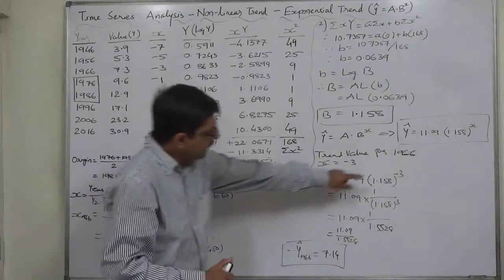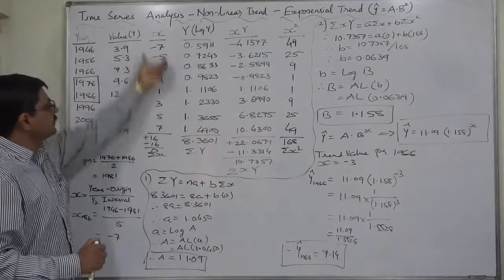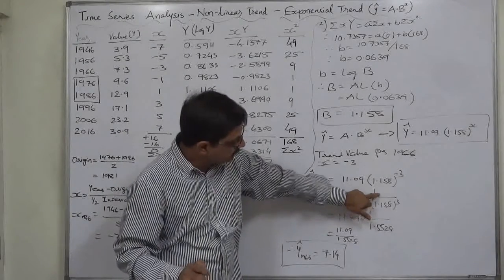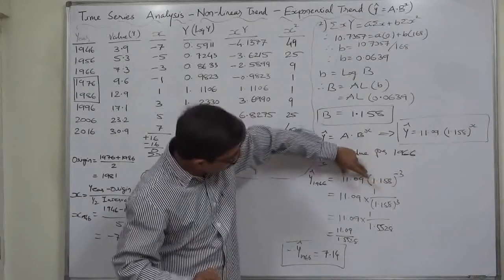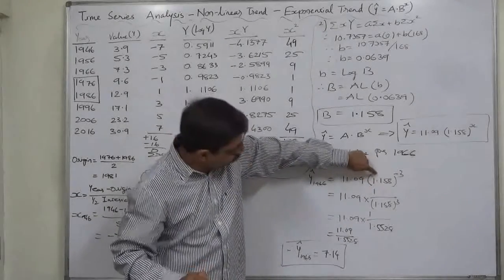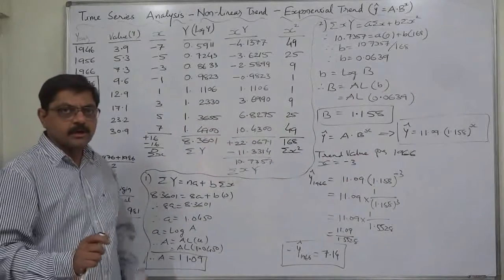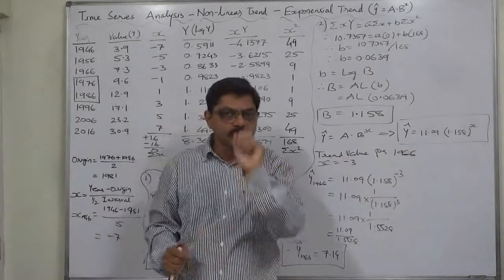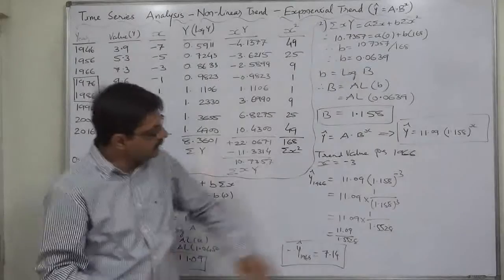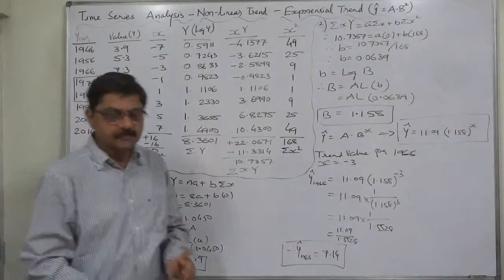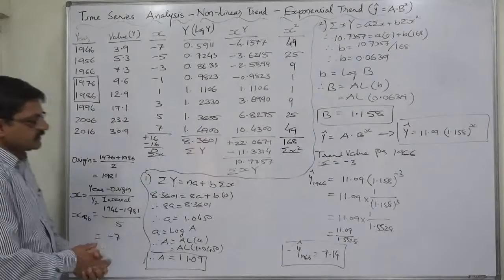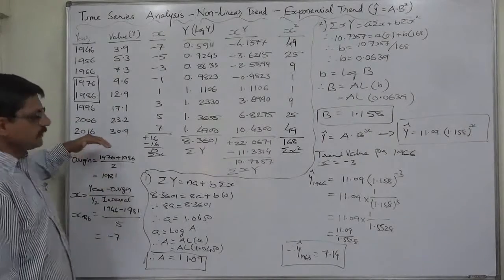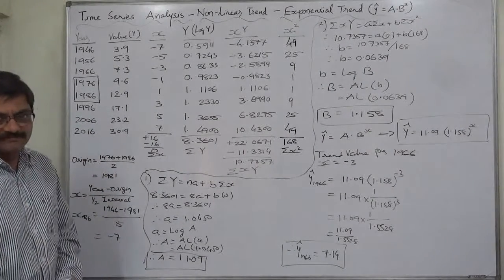Be careful where the value of x is negative when finding trend values. In case of positive x, such as positive 3, you simply multiply 11.09 by the cube of 1.158 directly. But for negative x there is a real possibility of error, especially forgetting the negative sign. This is now your assignment: find the trend values for all other remaining 7 years and the estimated value for at least one future year. Thank you very much.